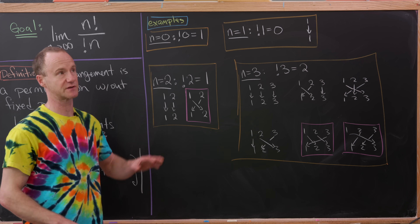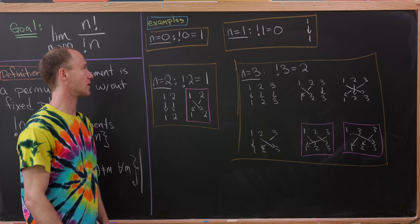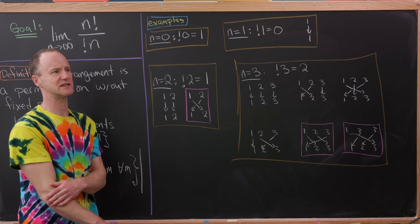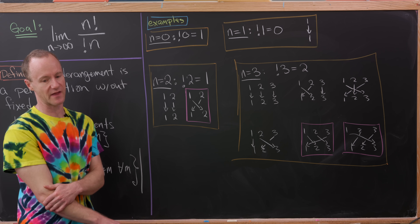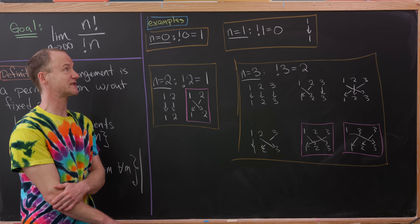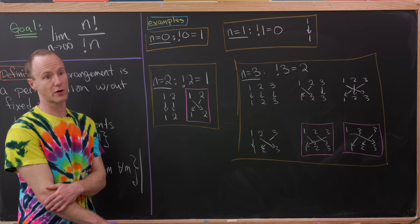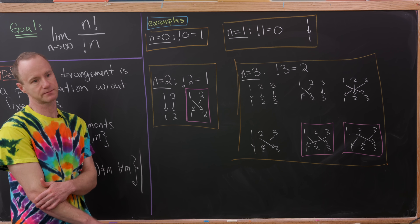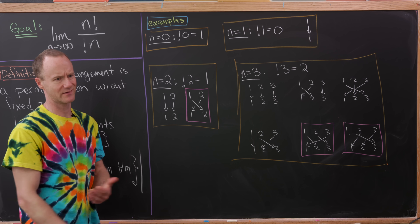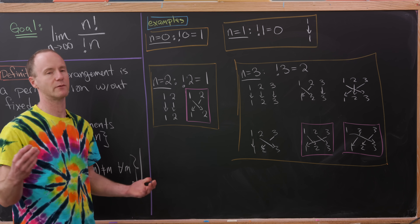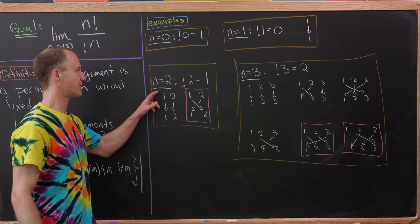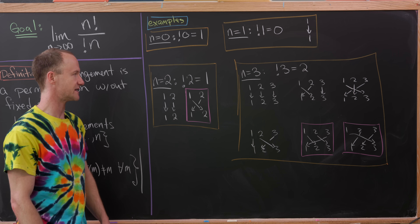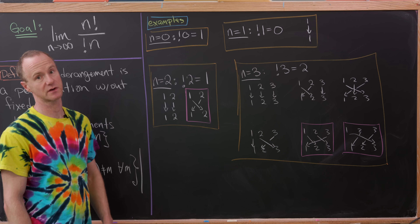Let's look at some examples. By definition, for n=0, the subfactorial of 0 equals 1 — you can think of this as the empty derangement. The subfactorial of 1 is equal to 0, because there's only one permutation from the set {1} to itself, and that is simply the identity map, which fixes everything, so there are no derangements. For n=2, there's the identity map and then the map that switches 1 and 2, meaning that the swap is our only derangement. So the subfactorial of 2 is 1.